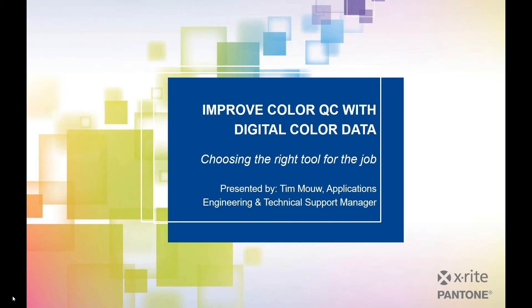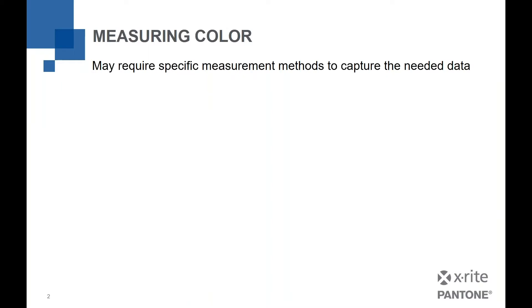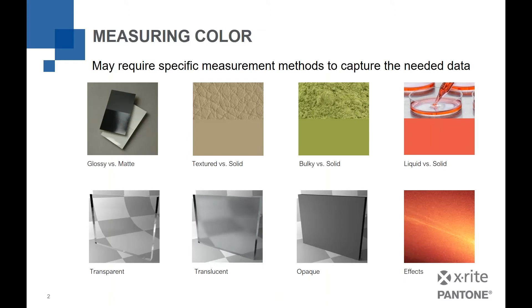As you can see on the title slide, we're talking about improving color quality control with digital color data. Another way of saying that is: how am I going to measure this stuff, and how do I choose the right tool for the job? Because there's more than one way to measure color. Measuring color may require specific measurement methods to capture the needed data, and that can be affected greatly by what I'm measuring.